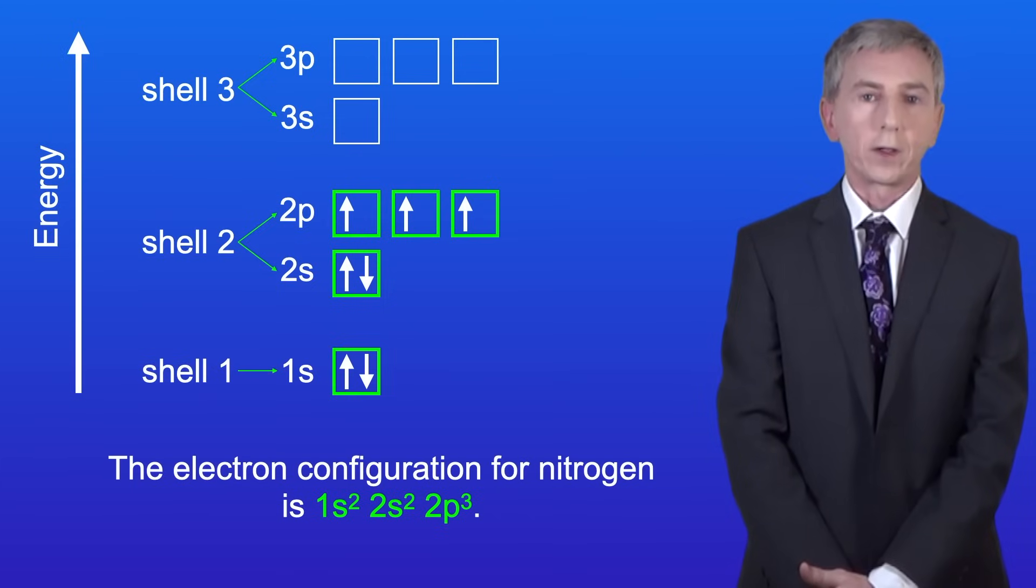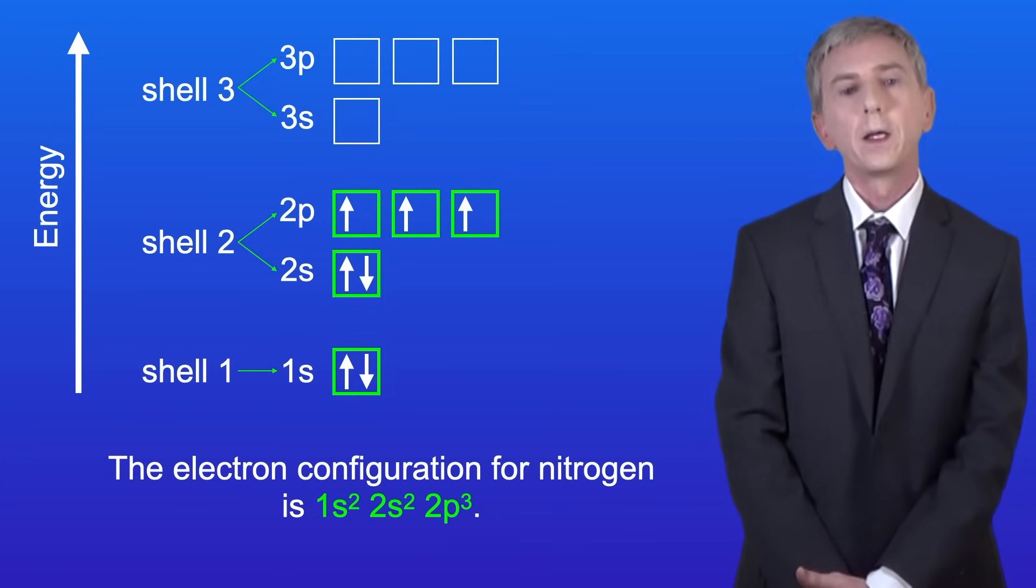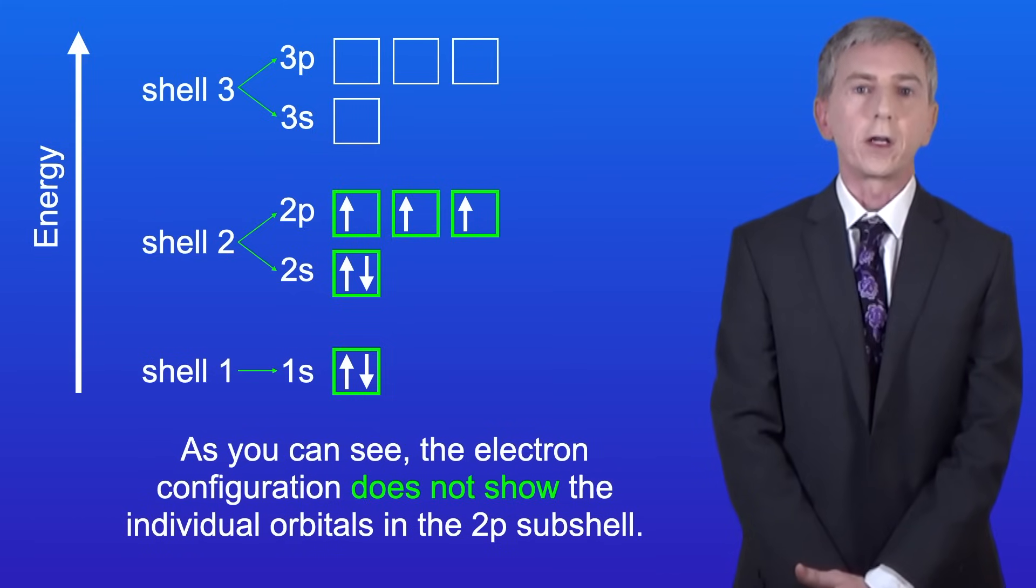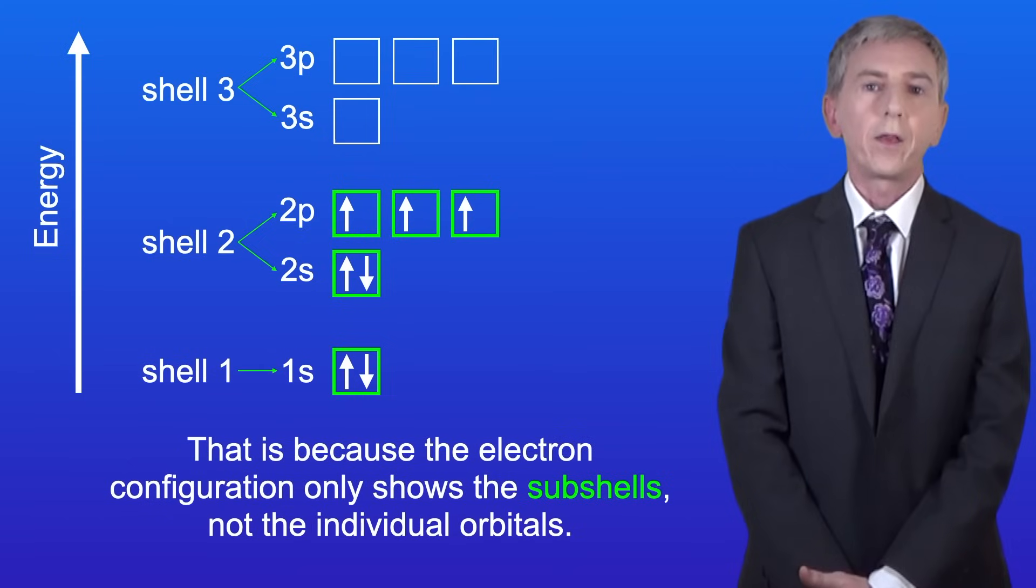The electron configuration for nitrogen is 1s2, 2s2, 2p3. As you can see, the electron configuration does not show the individual orbitals in the 2p subshell, and that's because the electron configuration only shows the subshells, not the individual orbitals.